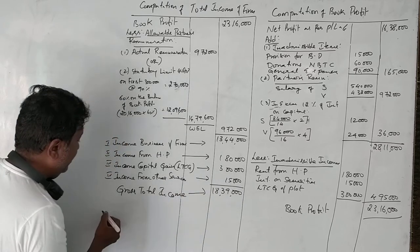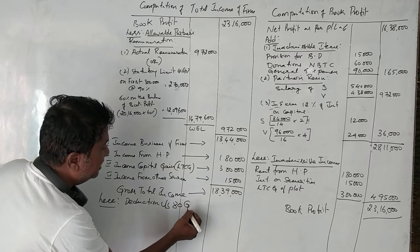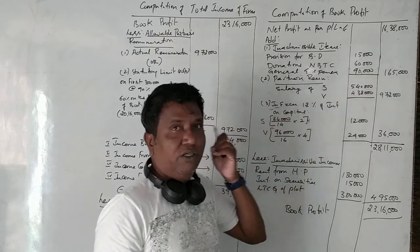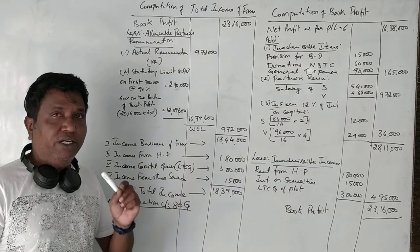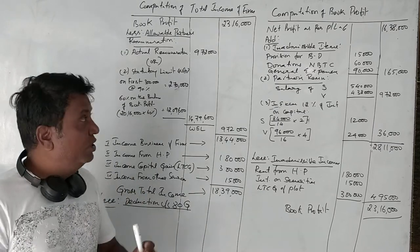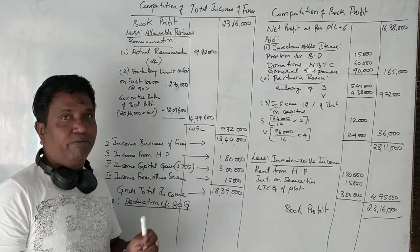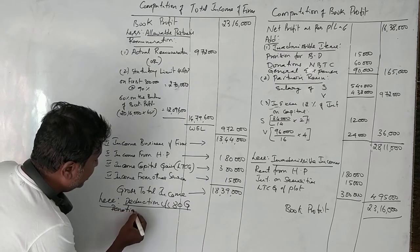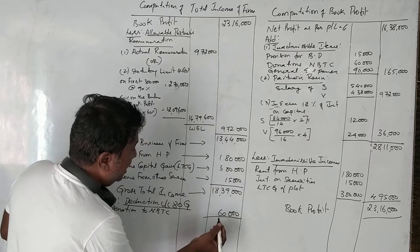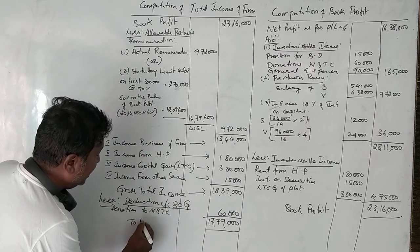From gross total income, we deduct under Section 80G. A donation of ₹60,000 was given to National Blood Transfusion Council (NBTC). Under the Income Tax Act 1961, donations to NBTC qualify for 100% deduction from gross total income. Deducting ₹60,000, we get total income of ₹17,79,000.